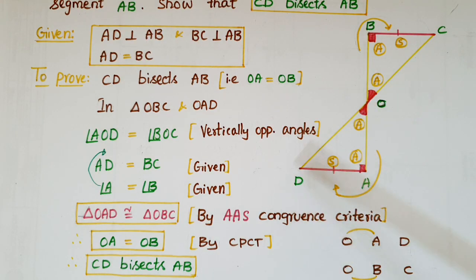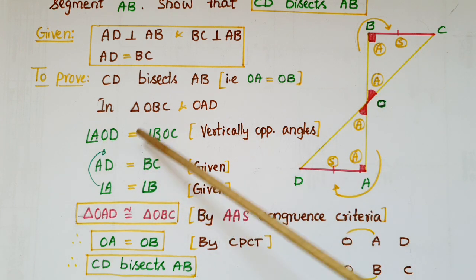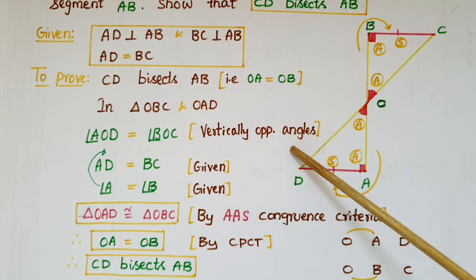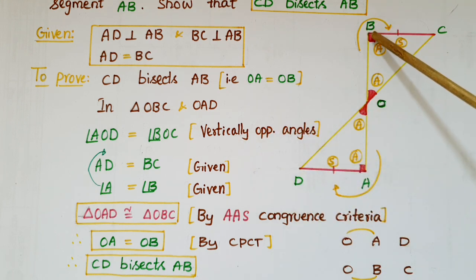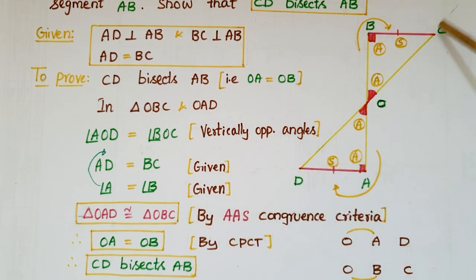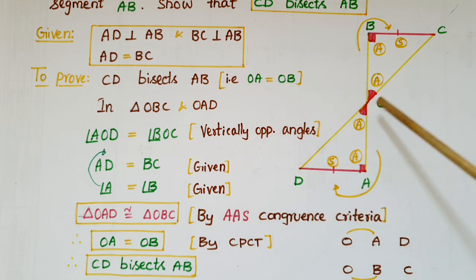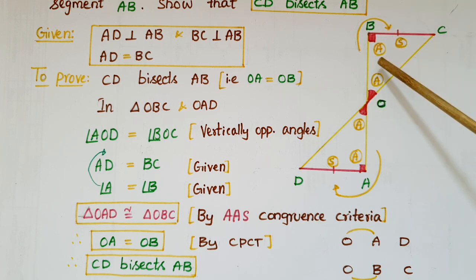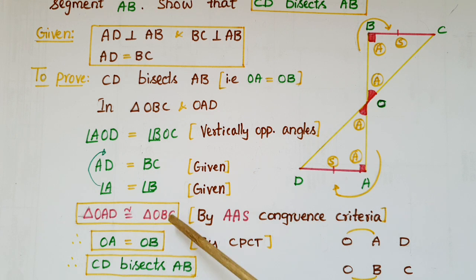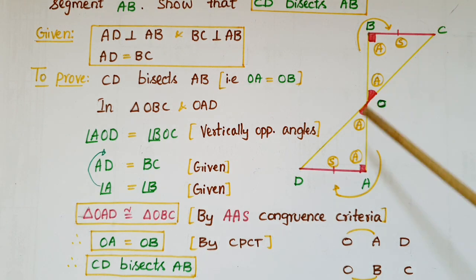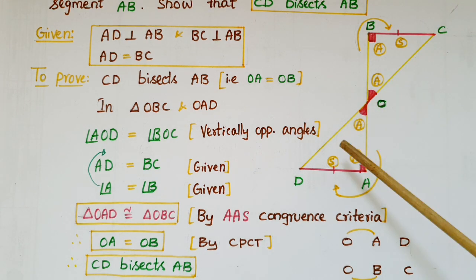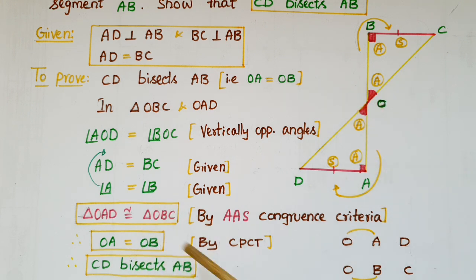In triangle OAD and triangle OBC: these two angles are vertically opposite angles, so angle AOD is equal to angle BOC. Angle A is equal to angle B — these are both 90 degrees. And AD is equal to BC, which is given. So angle-angle-side of this triangle are equal to the corresponding angle-angle-side of this triangle. Therefore, triangle OAD is congruent to triangle OBC by AAS congruence criteria. Once congruent, OA is equal to OB by CPCT, which means CD bisects AB.